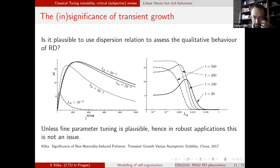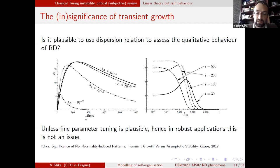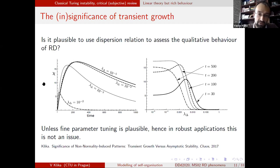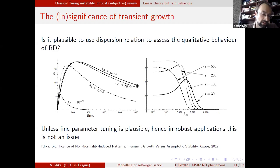If you step back and look at the full linear operator for the system of two PDEs, you see the operator is not only non-self-adjoint but also non-normal, because of the coupling in the linearization of the kinetics. If the Jacobian is a non-normal matrix, the full operator of the problem is non-normal, which means one should consider pseudo-spectrum rather than spectrum alone.